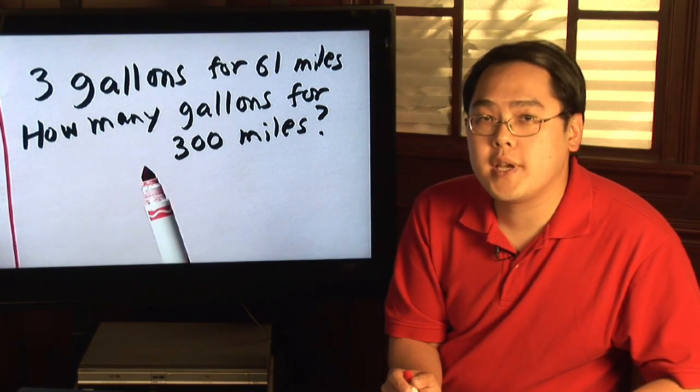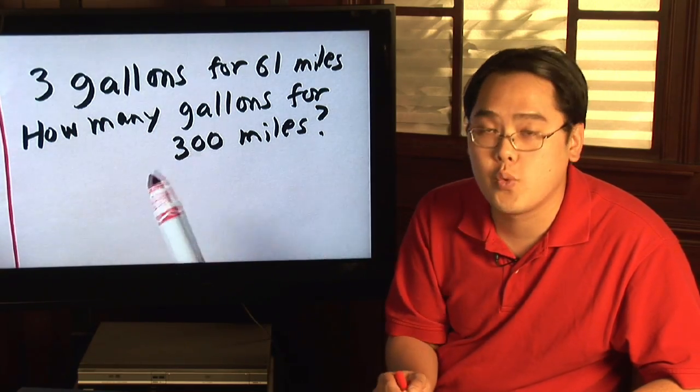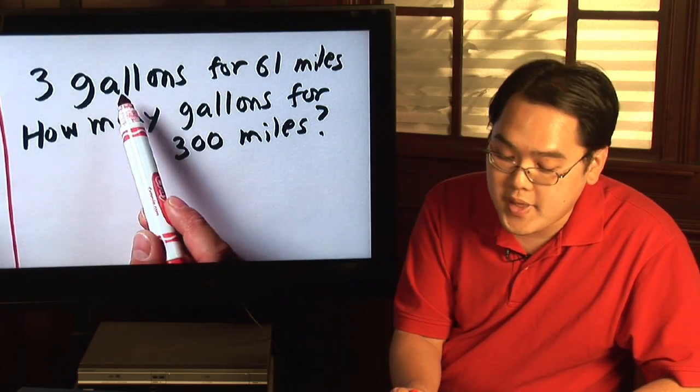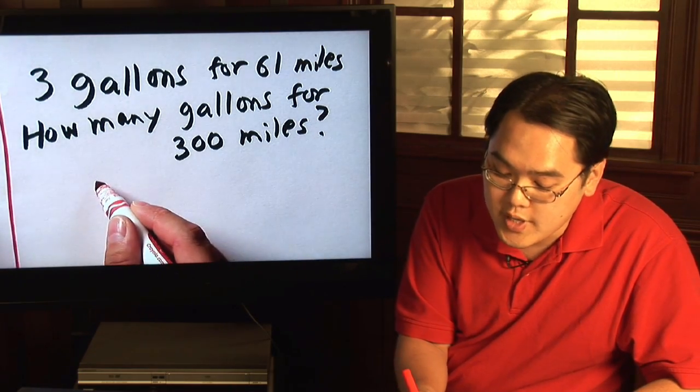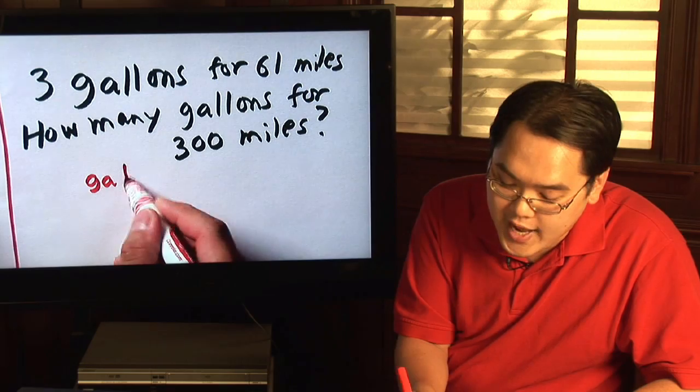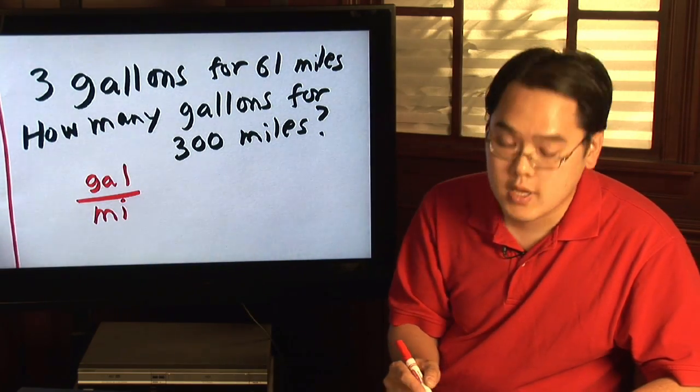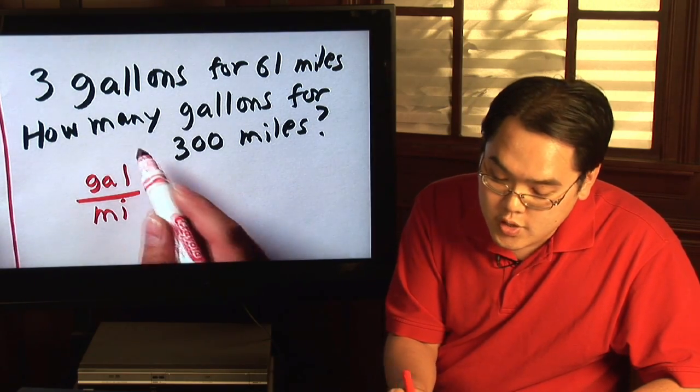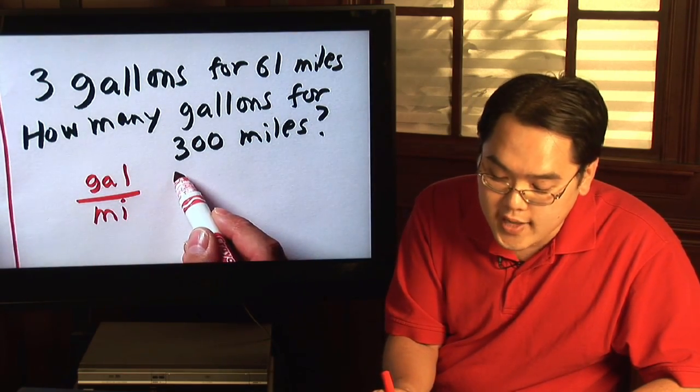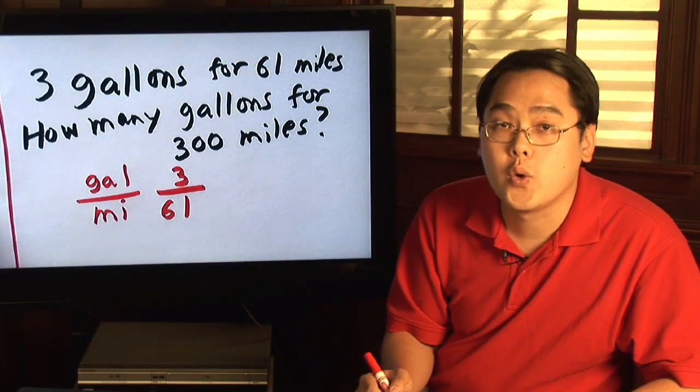Now what you have to do is to make a decision as to what number you want on top, which one you want on the bottom. Now being that gallons is mentioned first and miles is mentioned second, what you can do is make a comparison of gallons over miles. Now just put in the numbers where they belong. So the first comparison is three gallons, so the three would be on top and sixty-one would be at the bottom.